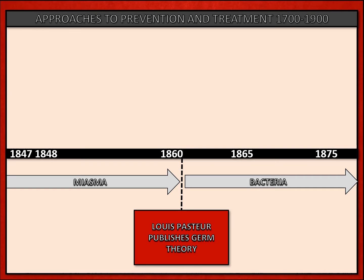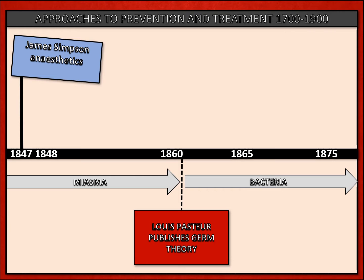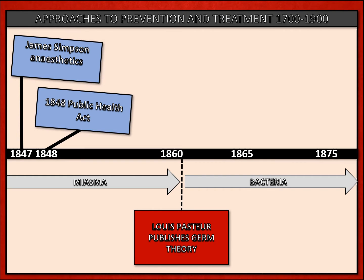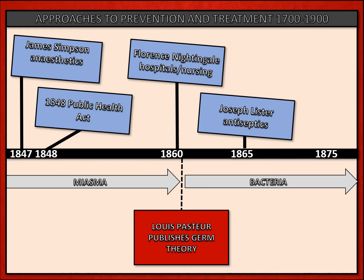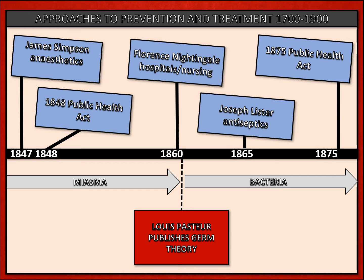Here's the big picture for approaches to prevention and treatment from 1700 to 1900. On our timeline we're highlighting Louis Pasteur's germ theory in 1861 as a key moment. We'll be looking at James Simpson's work on anaesthetics, the 1848 Public Health Act, Florence Nightingale's work with hospitals and nursing, Joseph Lister's work on antiseptics, and finally the 1875 Public Health Act.